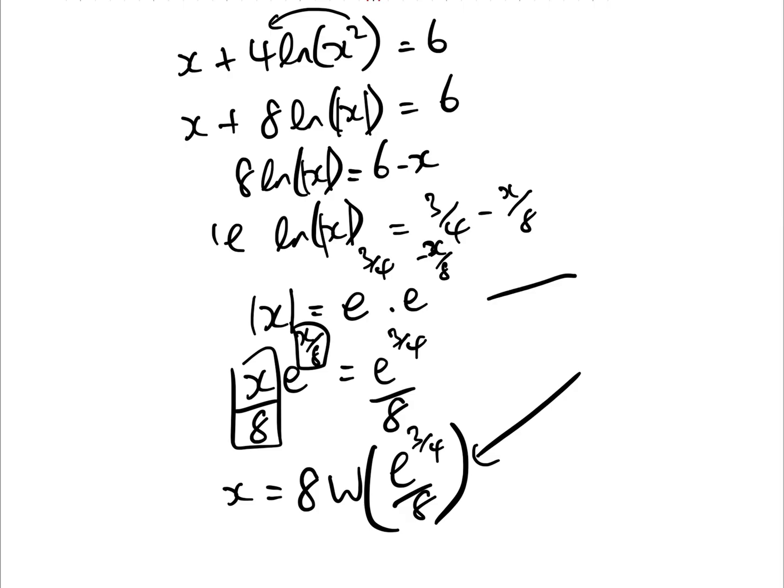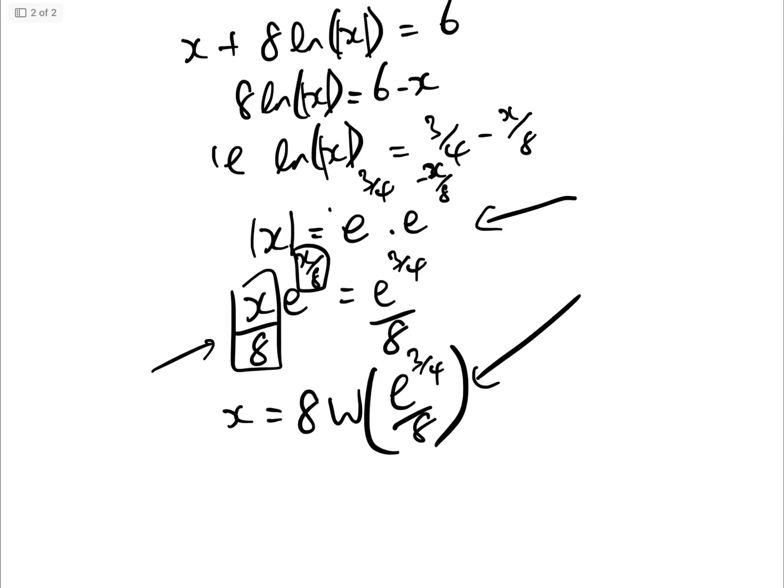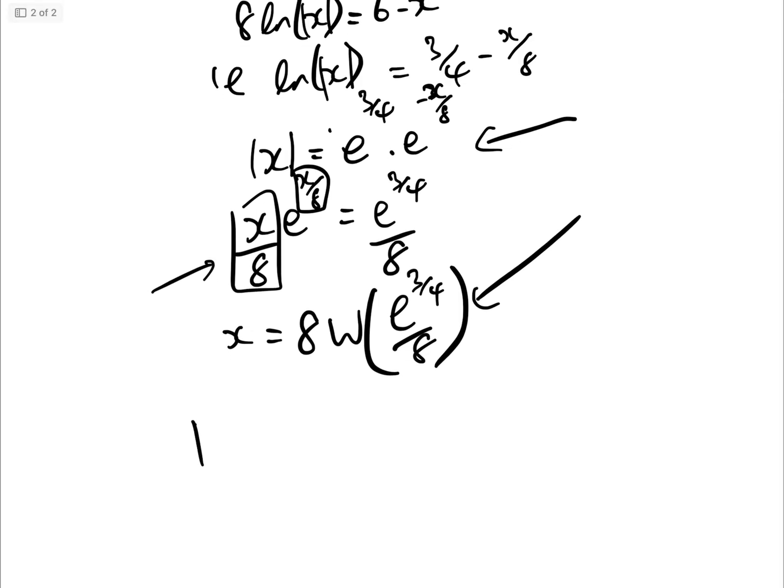So from here, we would get that x equals either plus or minus e to the 3 quarters over 8. And then from here, we would have our mod x, just to clarify this, mod x e to the x over 8 over 8. We would get this e to the 3 quarters over 8 if we use the mod.